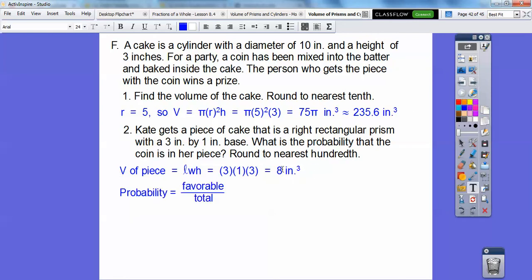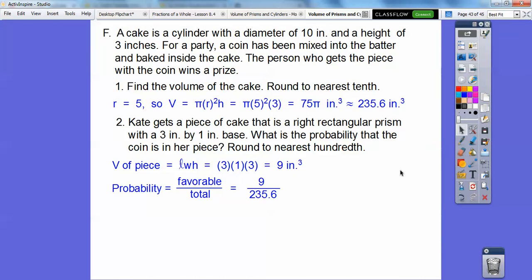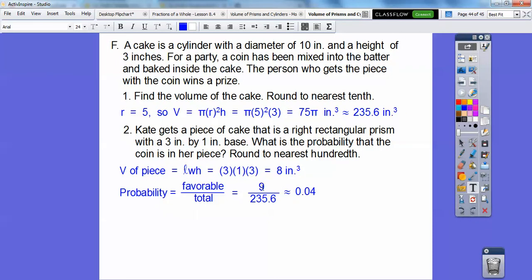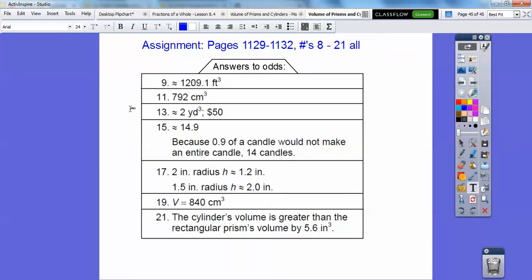So probability is favorable divided by total. So the favorable is we're hoping it's in this piece right here divided by the total. I have the 9 there, so I don't know what I'm doing. Anyways, if you're in my class, you see me doing this all the time. Does your math teacher make mistakes? Probably, and I do all the time. So anyways, I get about, when I punch that in the calculator, about 0.04 right there. All right, you guys, if you are in my class, that's going to be your assignment right there. Take care.